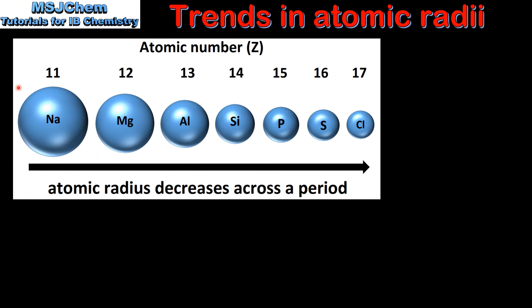Here we have the elements in period 3, sodium to chlorine. As you can see, the atomic radius decreases across a period.